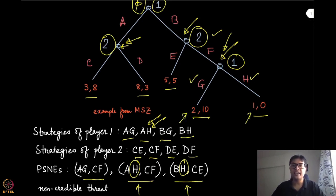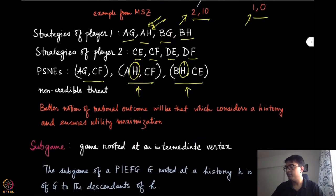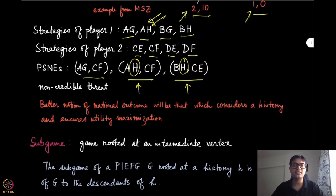This goes against the idea of rationality we have defined — that whenever a player can pick an action which maximizes its utility, it will always pick that. So this is not consistent with that notion of rationality. Therefore, even though (AH, CF) and (BH, CE) turn out to be pure strategy Nash equilibria, these threats or outcomes are not really credible.